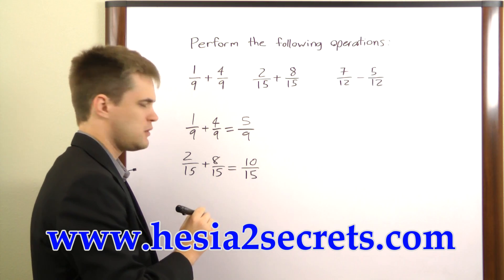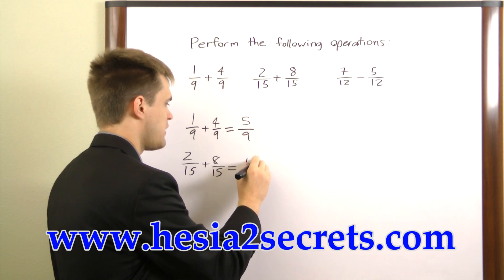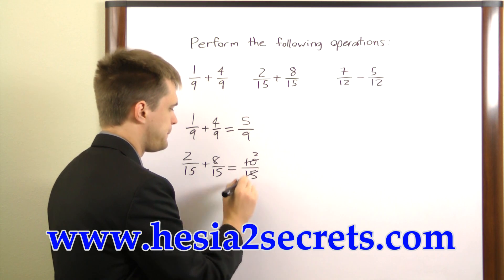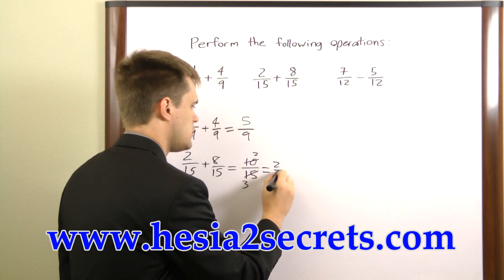So 10 and 15 are both divisible by 5, so if we divide 10 by 5 we get 2, and if we divide 15 by 5 we get 3. So this is also equal to 2 over 3.